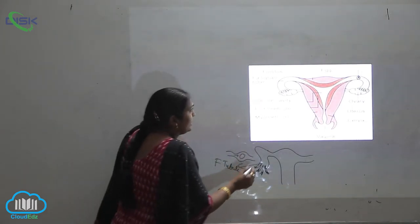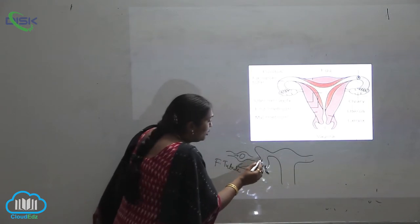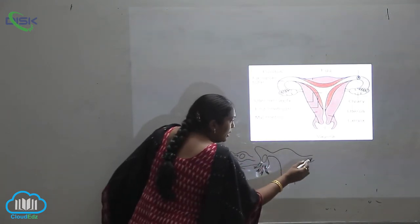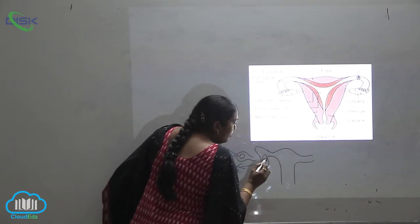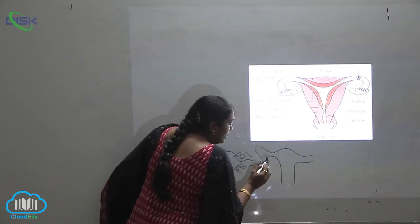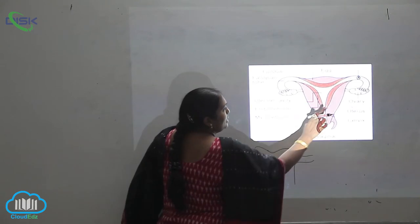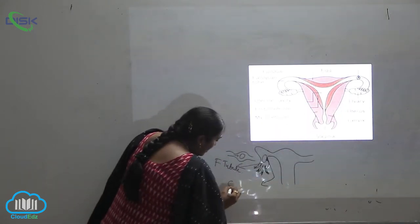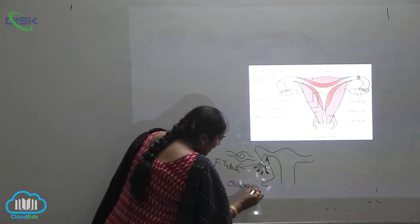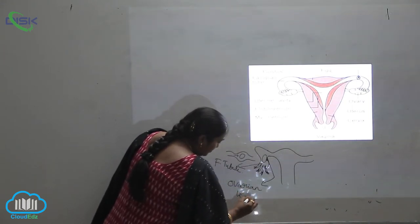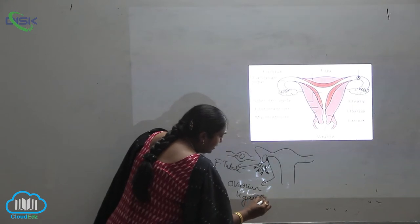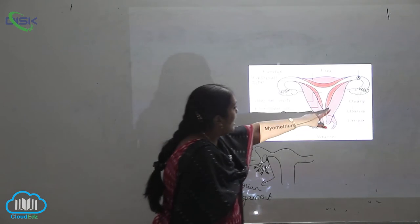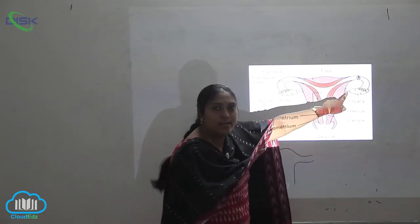When you see the fallopian tubule, the ovary will be here. You can see the ovary, which is attached with a particular muscle-like structure. This is called the ovarian ligament — it is the attachment between the fallopian tubule and the ovary. You can see it very clearly in this yellow structure.